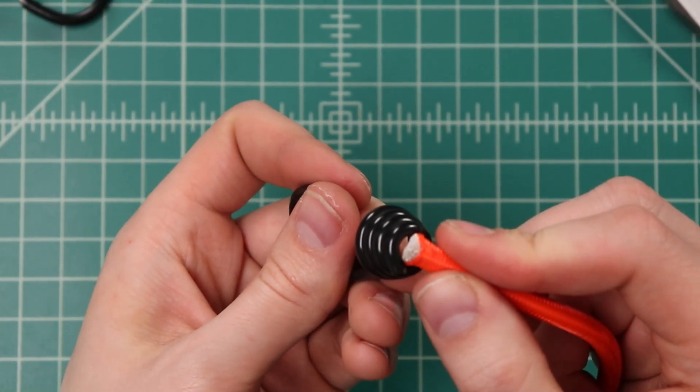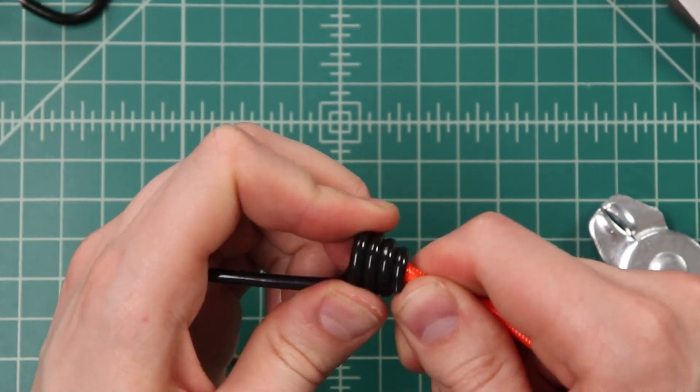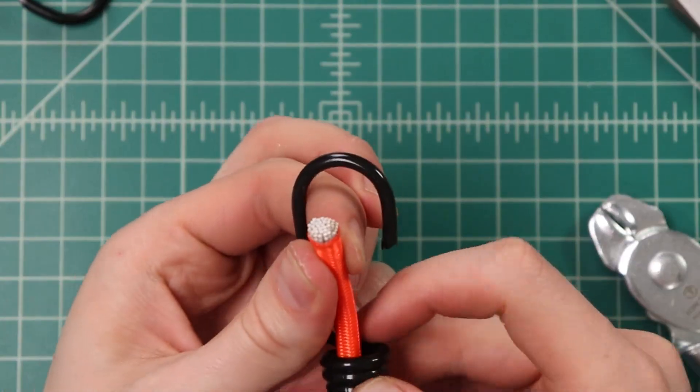Then we'll take one of our hooks and put the cord up through the bottom. It is a tight fit, but that's how it's supposed to be. So it might just take a little bit of work to get through.